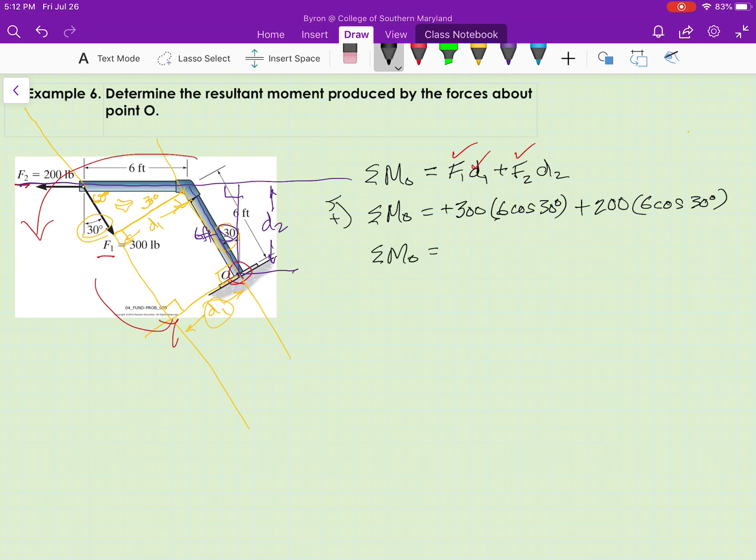So the sum of the moments about point O. These are identical here, so I can do some fancy algebra and simplify that last equation down to 3,000 cos 30.